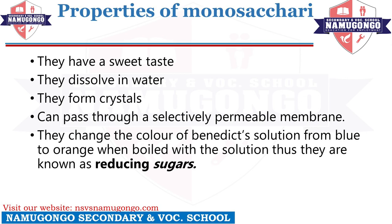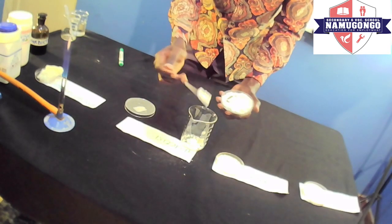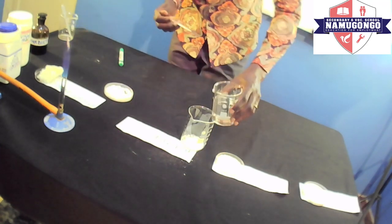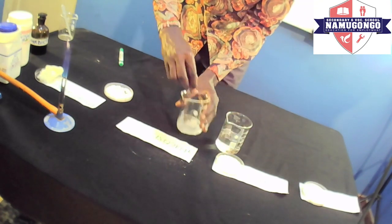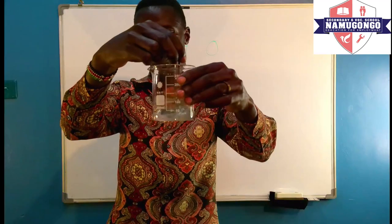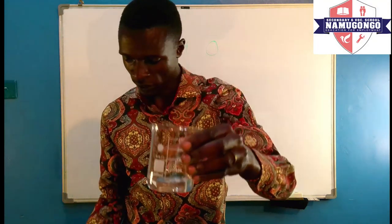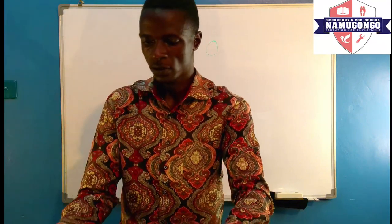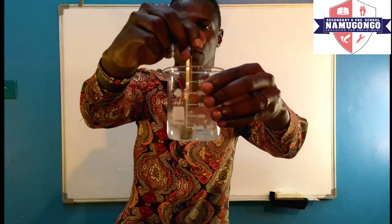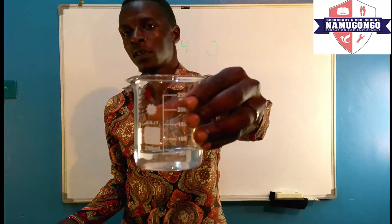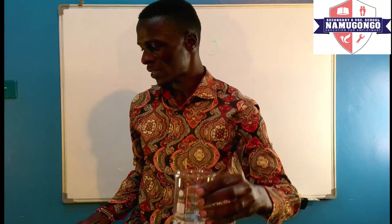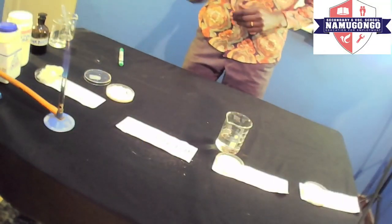Second, glucose dissolves in water, and that means galactose and fructose can also dissolve in water. Let's demonstrate: I'll get my glucose, add two spatulas of it, then add some water and stir. As you can see, the glucose has dissolved. So monosaccharides are normally soluble in water — that is their second property.